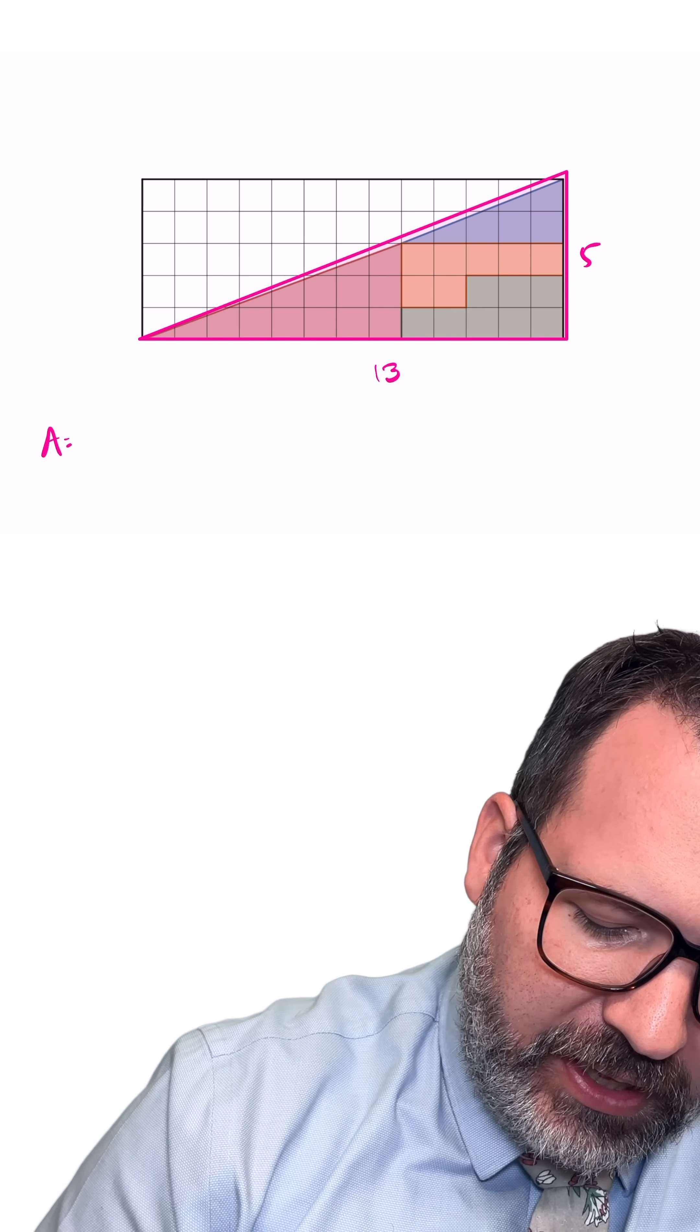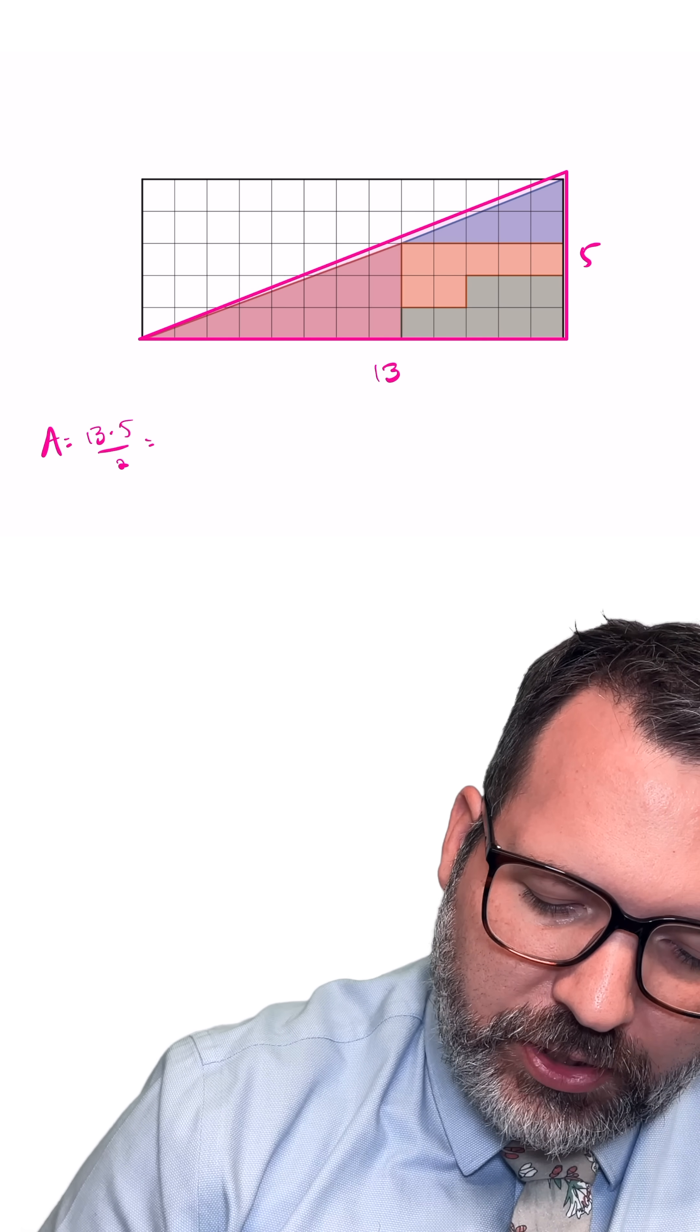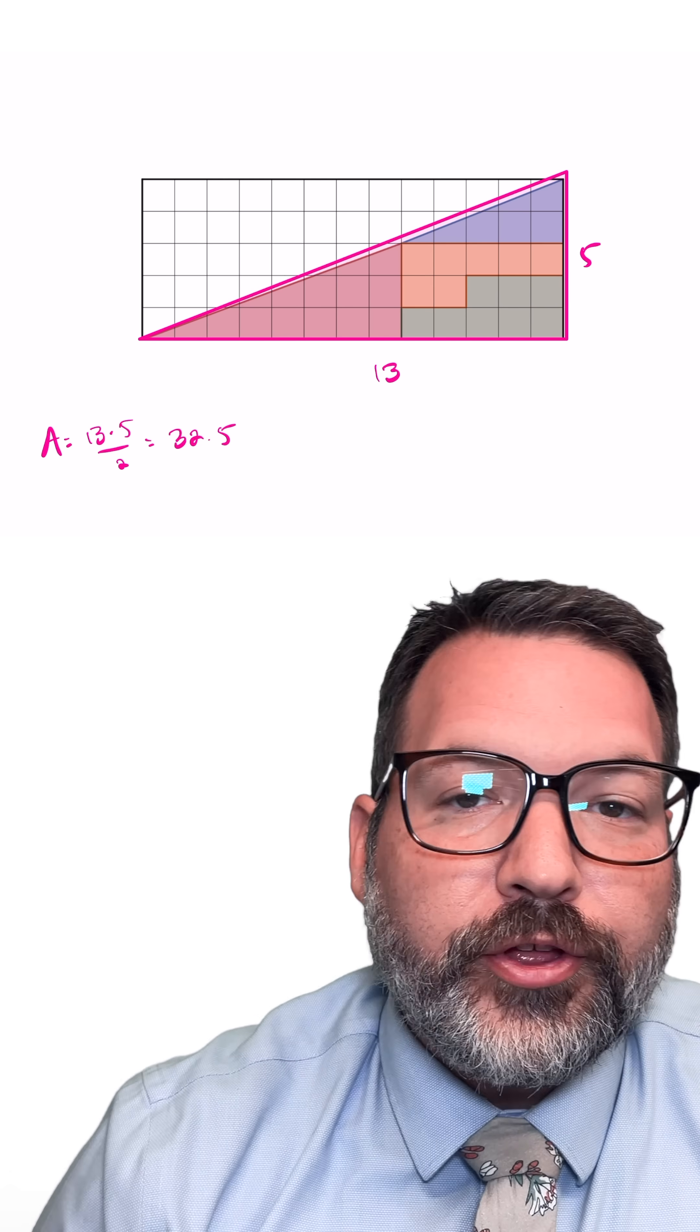And if I wanted to, I could even figure out the area of that triangle. Base times height divided by two gives us an area of 32.5.